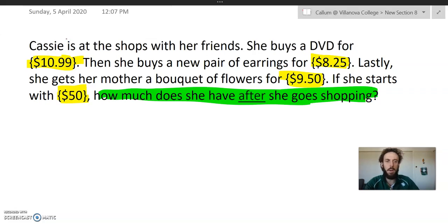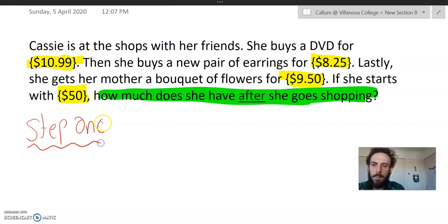So for me, I know, and I'm going to use my stylus, so bear with me if my handwriting's a bit rough. I know that step one is going to be figuring out how much she spent when she was at the shops. And to do that, first of all, I'm going to write it as a number sentence. I need to add the price of the DVD. I need to add the price of the earrings. And I need to add the price of the flowers.